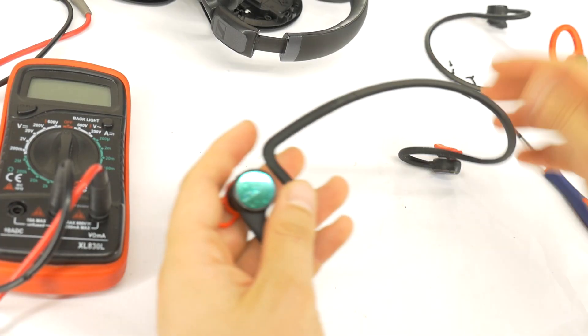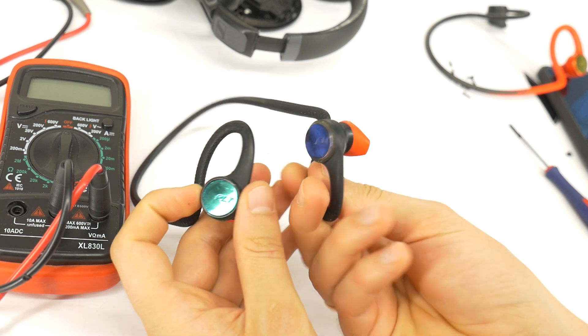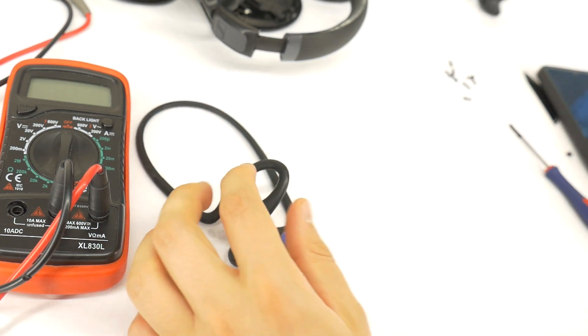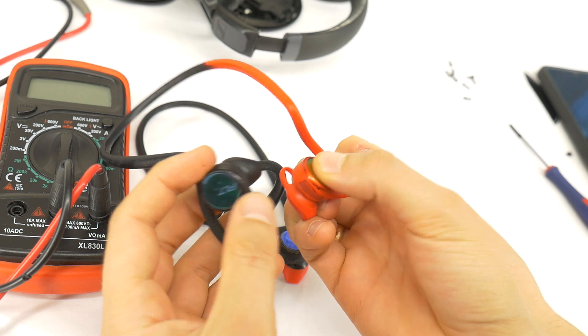The first rule if one side of your headphones stops working is to check if they are still under warranty. If they are, take advantage of the warranty.